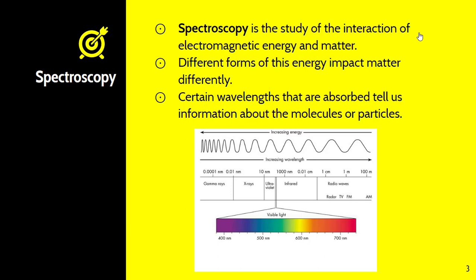It's a way for us to determine structures of unknown compounds. Certain wavelengths correlate to certain functional groups and molecules and the way certain things bond in molecules. Even if we have no idea what the substance is, spectroscopy allows us to have insight as to how the molecules are bonded and put together.